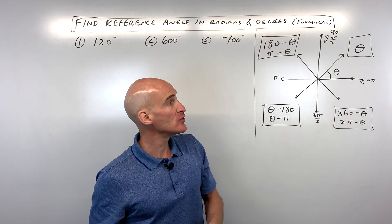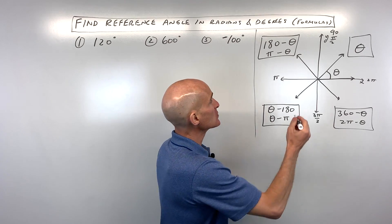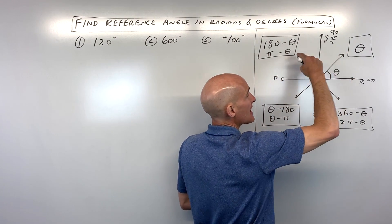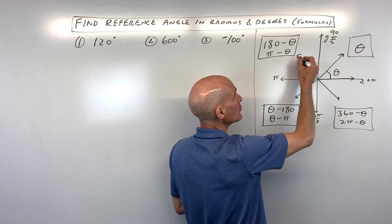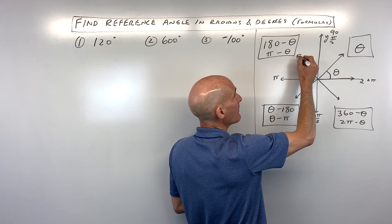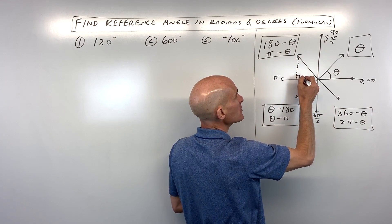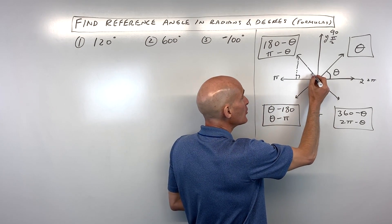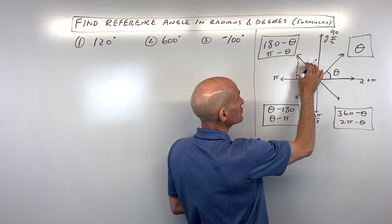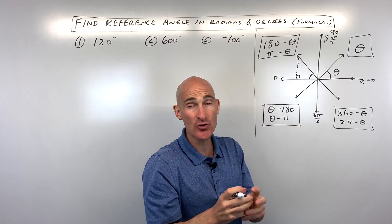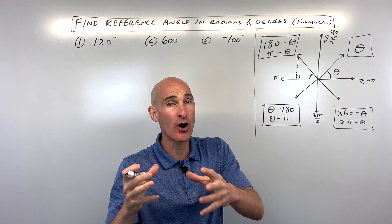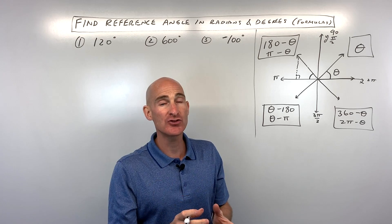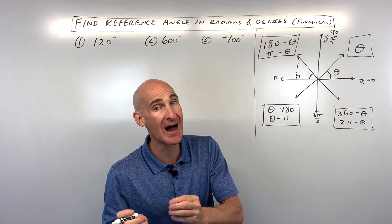If you don't want to use the formulas, wherever you end up — with the spinner, it can go around as many times as you want in either direction — wherever you end up, that's called the terminal ray. You always want to drop a perpendicular to the x-axis. Then look at the angle formed between the terminal ray and the x-axis — that's your reference angle. It's always between 0 and 90 in degrees, or 0 and pi over 2 in radians, and it's always positive.